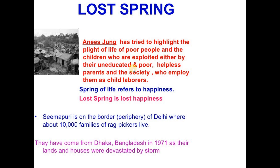A new nation had been formed, but there were still lots of problems like unemployment and poverty. Bangladesh was also severely hit by famine and drought. That is why many people there were forced to leave Bangladesh and enter India illegally as refugees. They came to Delhi, where Seemapuri is situated — a huge barren piece of land where they settled their huts. Slowly and gradually, those 10–15 people grew into a big slum settlement of 10,000 rag pickers.